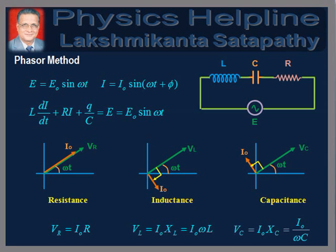We can solve the problem either by phasor method or by analytical method. First, we will discuss the phasor method. In case of a resistor, voltage is in phase with current. In case of an inductor, voltage leads current by a phase difference of π/2 radians, and in case of a capacitor, voltage lags behind current by a phase difference of π/2 radians, as indicated in the phasor diagrams. The peak voltages across the resistor, the inductor, and the capacitor are Vr = I0·R, Vl = I0·XL, and Vc = I0·Xc, where XL = ωL and Xc = 1/(ωC).